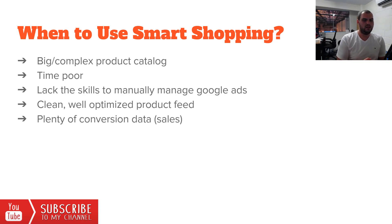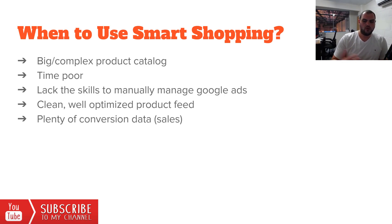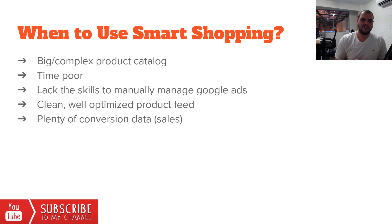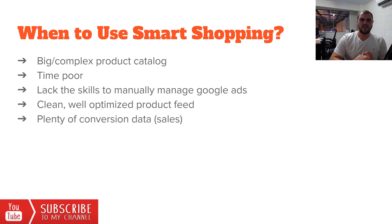The last factor is you need to have plenty of conversion data and sales. When someone has tons of data, Google's algorithm has plenty of info to work on as to what your ideal customer looks like — what they're searching, what search terms convert, when they convert, what devices they use. Data in and data collected helps the algorithm decide when to show your ads.